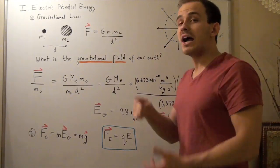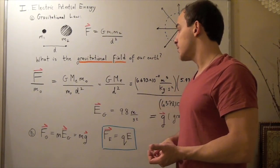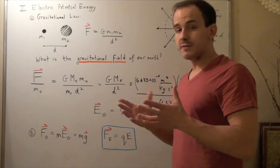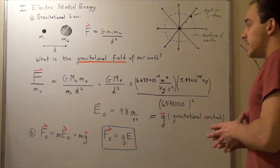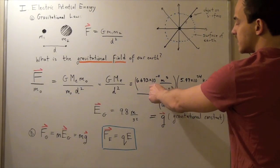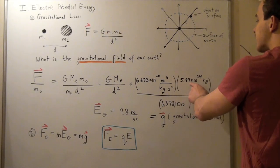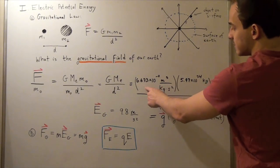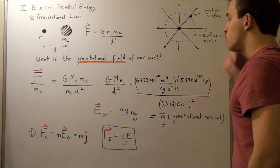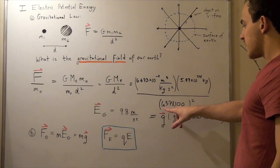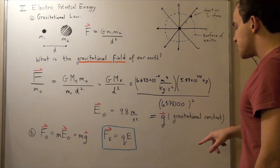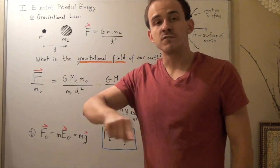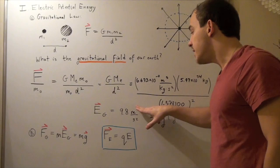I know the radius, the mass of the Earth, and the gravitational constant — all found in any textbook or online. Plugging them in: G is 6.673 times 10 to the negative 11, Earth's mass is 5.97 times 10 to the 24 kilograms, and the radius is 6,778,100 meters. Squaring the radius and computing, I find the gravitational field on the surface of the Earth is 9.8 meters per second squared.